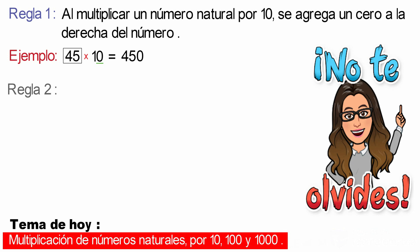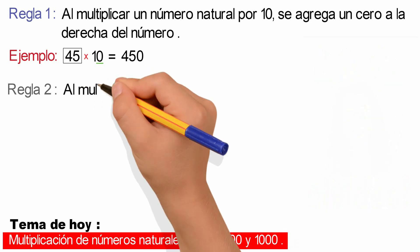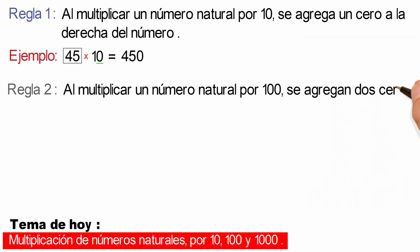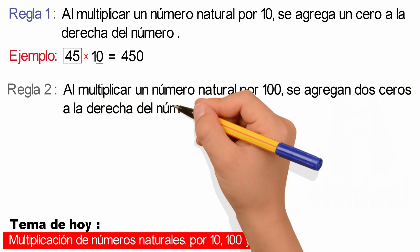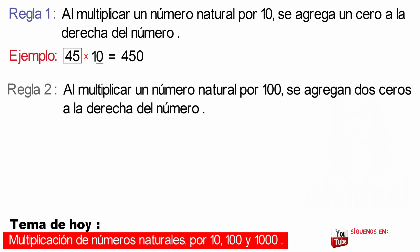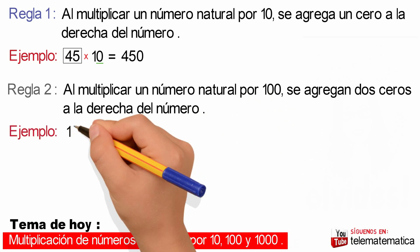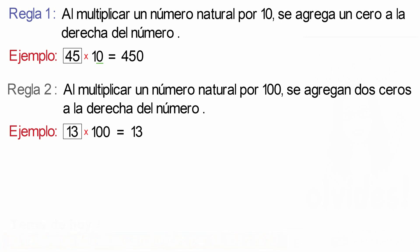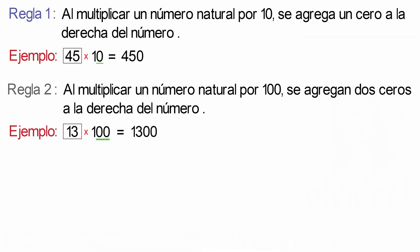Regla número 2. Al multiplicar un número natural por 100, se agregan dos ceros a la derecha del número. Veamos un ejemplo: 13 multiplicado por 100. Aplicando la regla, escribimos el número 13 y le agregamos los ceros del número 100, cuyo resultado sería 1300.